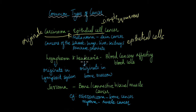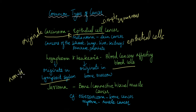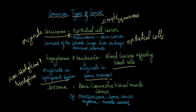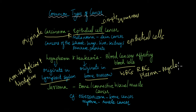Lymphomas and leukemias are blood cancers that affect blood cells. Lymphomas originate in the lymphoid or lymphatic system — examples include non-Hodgkin's and Hodgkin's lymphoma. Leukemias are cancers that originate in the bone marrow and affect white blood cells, red blood cells, and even plasma cells. If the plasma cells are cancerous, that is known as a myeloma.